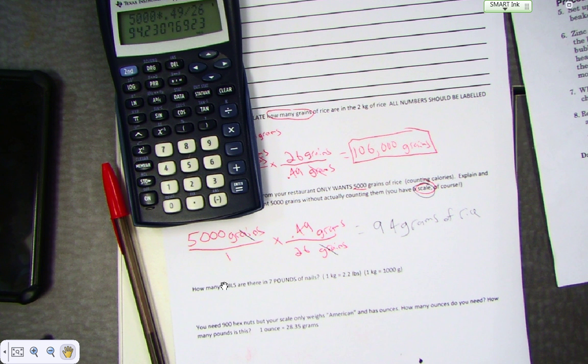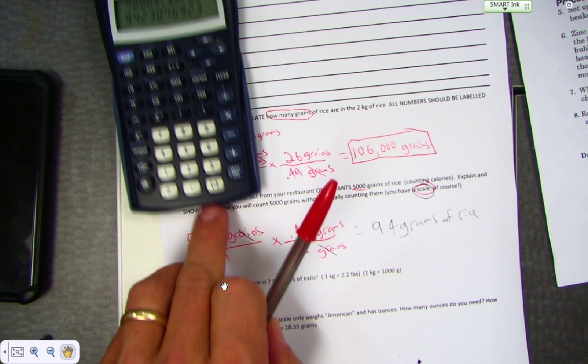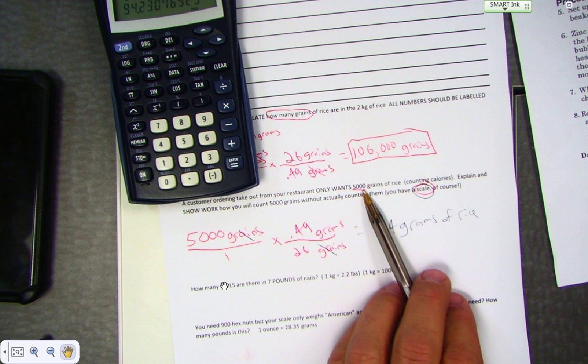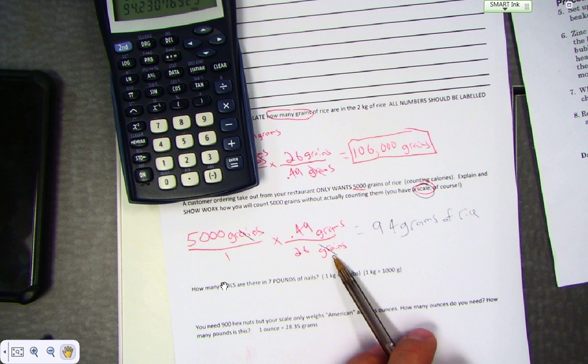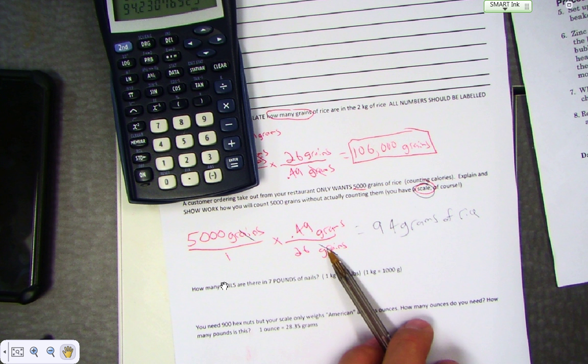I got disconnected for a moment. Let me just sum up what I was going over. When I wanted only 5,000 grains of rice, I started with 5,000 grains over one. Of course I need grains on the bottom so it will cross off. What do I really want on top if I read the question?